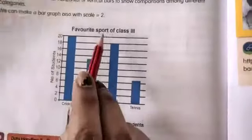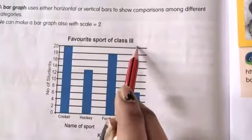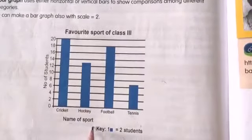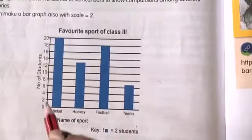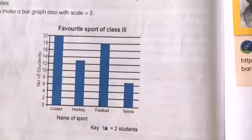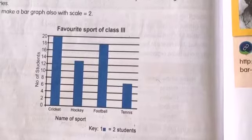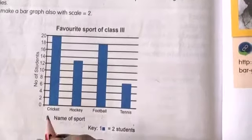So here they gave favourite sport of class 3. So here children, name of the sport. The name of the sport is cricket, hockey, football and tennis. So here they gave scale 2. Already I have explained to you in S2 and S3 what is scale 2, right?